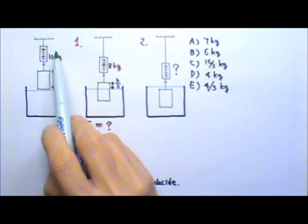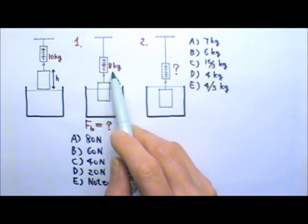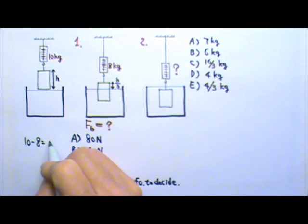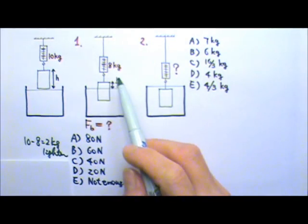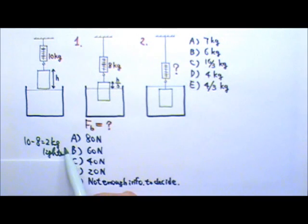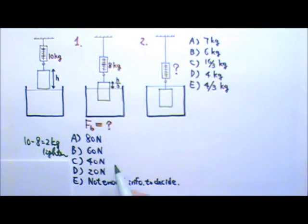The block weighs 10 kg but now it only has an apparent mass of 8 kg, so it has gotten 10 minus 8 equals 2 kg lighter. The block seems 2 kg lighter because of the buoyant force, so 2 kg must equal the mass equivalent of the buoyant force. If 2 kg is the mass equivalent of the buoyant force, the buoyant force must be 20 N. So the answer is D.